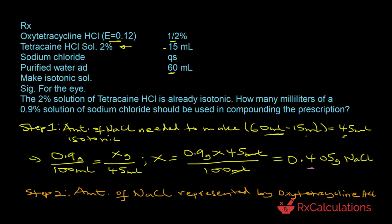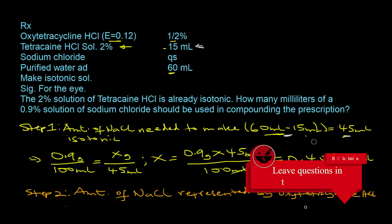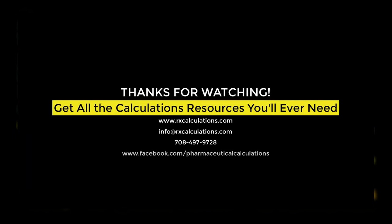The key to making questions like this tricky is quickly identifying that some volume already in your preparation is isotonic, so you don't include it in the volume needing adjustment. The most important decision is in step 1 — figuring out the actual volume to adjust using sodium chloride as your tonicity-adjusting agent. I hope you found this tutorial useful. If you did, be sure to like and share it, leave questions in the comments, subscribe, and click the bell. Thank you for watching — see you in the next video.